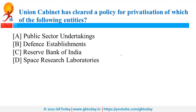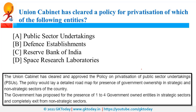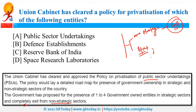The Union Cabinet has cleared a policy for the privatization of PSUs — Public Sector Undertakings. As per this policy, the government should completely exit from non-strategic sectors. There are two types of sectors: non-strategic and strategic. In strategic sectors, the government should maintain a presence of one to four PSUs. In non-strategic sectors, the government should privatize and disinvest.